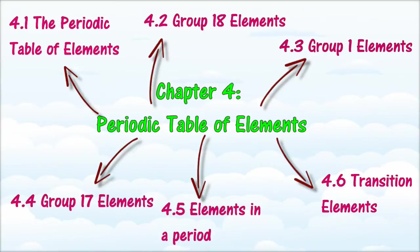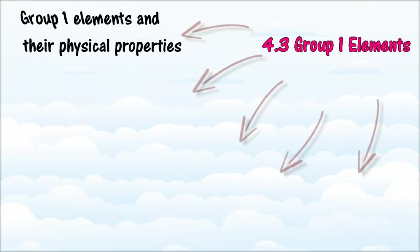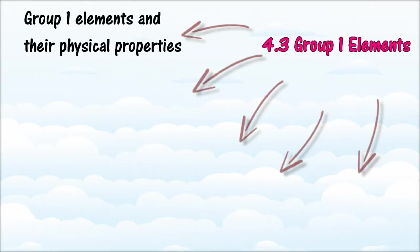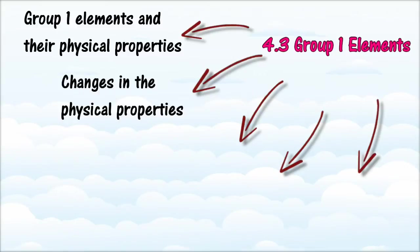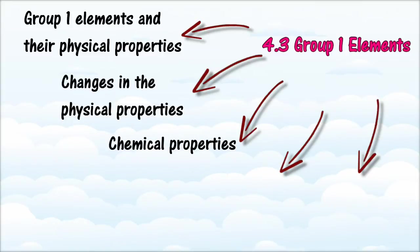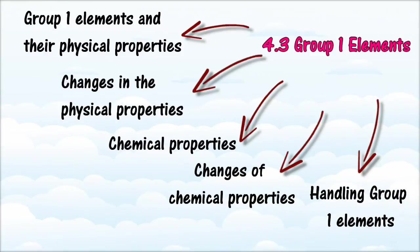In section 4.3, we will learn about elements in Group 1. At the end of this section, you should be able to list all Group 1 elements, state the general physical properties of lithium, sodium, and potassium, describe changes in physical properties from lithium to potassium, list and describe the similarities in chemical properties of lithium, sodium, and potassium, relate chemical properties to their electron arrangements, describe changes in reactivity down the group, predict physical and chemical properties of other Group 1 elements, and state safety precautions when handling Group 1 elements.